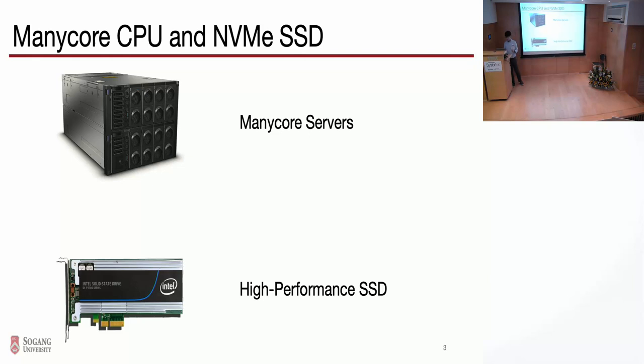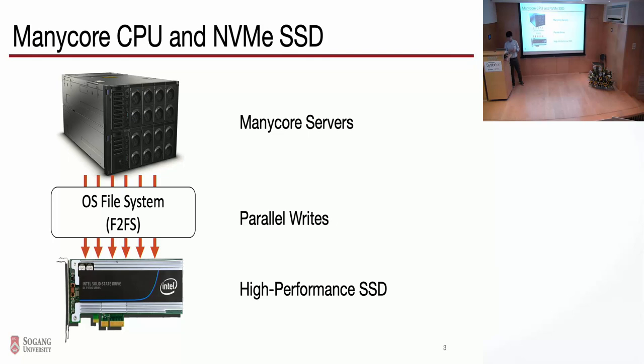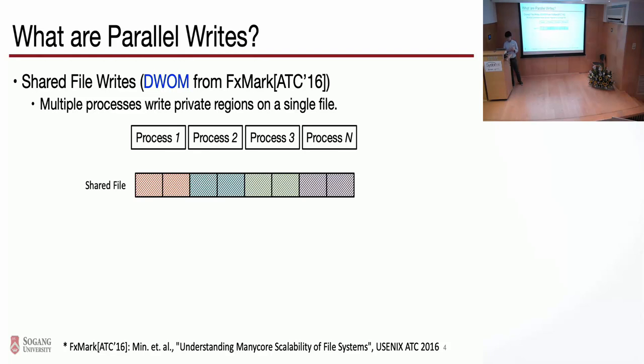With respect to parallel writes, we can think about how the OS file system — the native file system — can handle parallel writes and what the performance is. Before we jump into our preliminary evaluation, let me briefly describe the parallel writes workloads. We selected two workloads from FXMark. The first scenario is the shared file writes. We borrowed the DWM workload from FXMark. In this workload, multiple processes write to a private region in a single file.